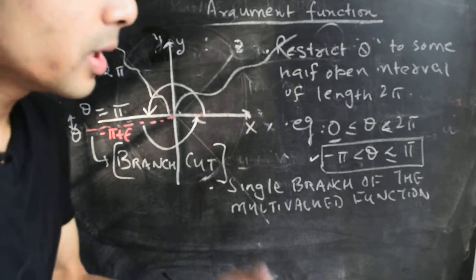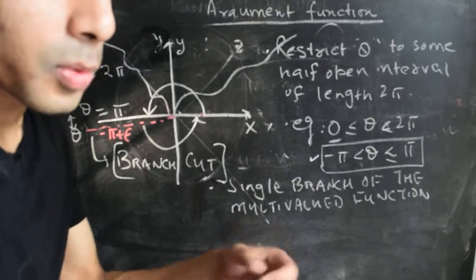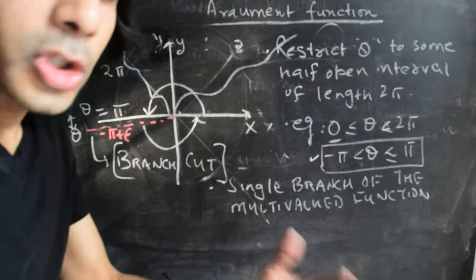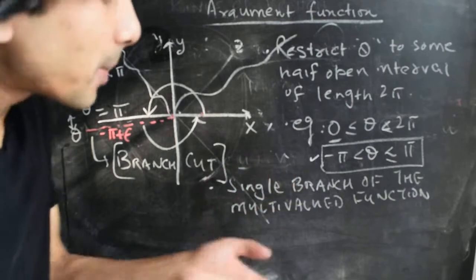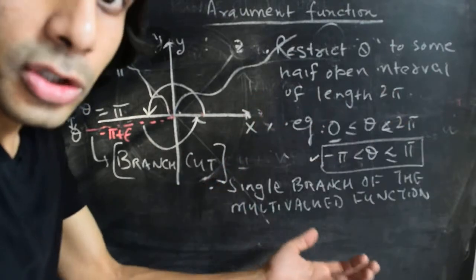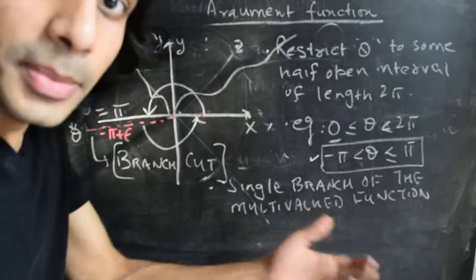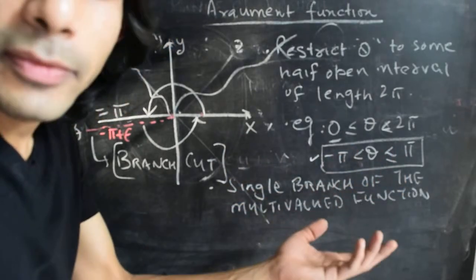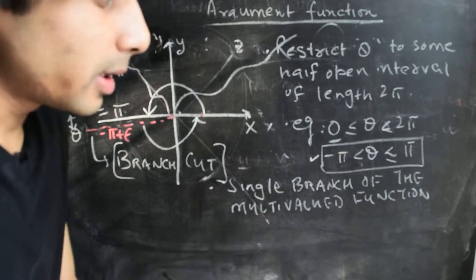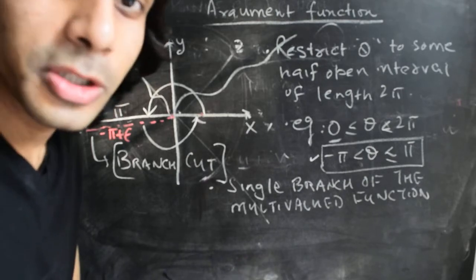These ideas apply whenever we deal with multi-valued functions, be they algebraic or logarithmic. This discussion illustrates how to distinguish an algebraic from a logarithmic branch point, and more generally how branch cuts help us choose single-valued branches — all in the context of the familiar argument function. We implicitly make these kinds of choices when dealing with trigonometric functions. Let's continue with these ideas in future videos. Hope to see you soon, and thank you for watching.